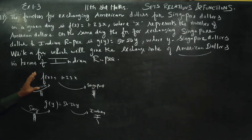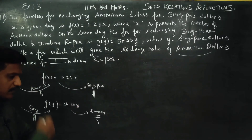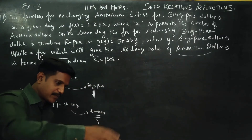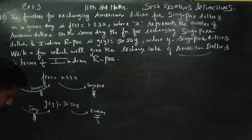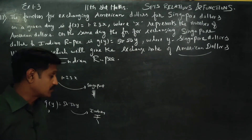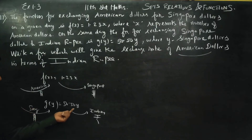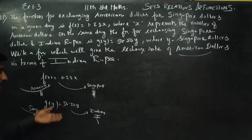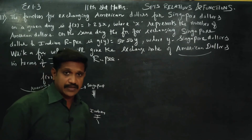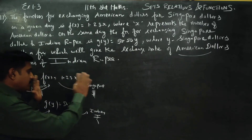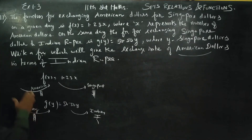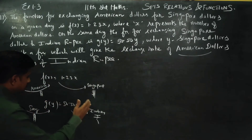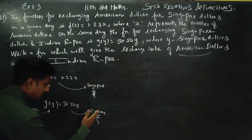So F function is clear: American Dollars come in, Singapore Dollars go out. G function: Singapore Dollars come in, Indian Rupees go out. For example, Singapore Dollar 1 gives 50.50 Indian Rupees. These are two different functions: America to Singapore, and Singapore to India.